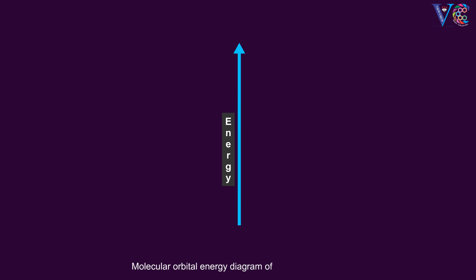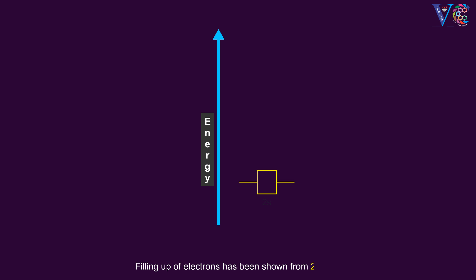Molecular Orbital Energy Diagram of Oxygen Molecule. Filling up of electrons has been shown from the 2s level.